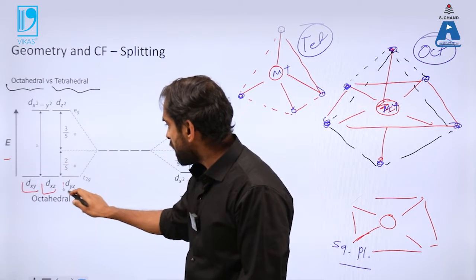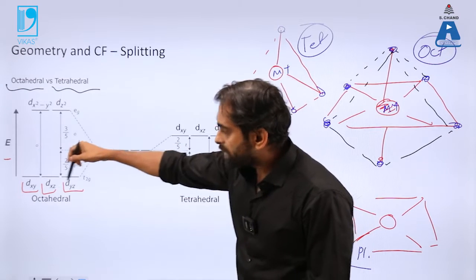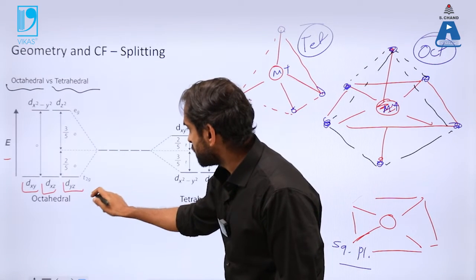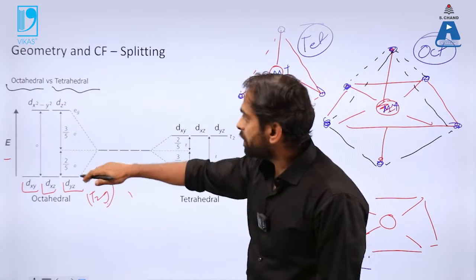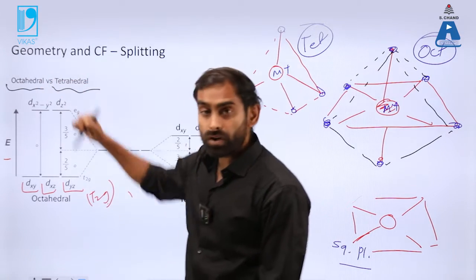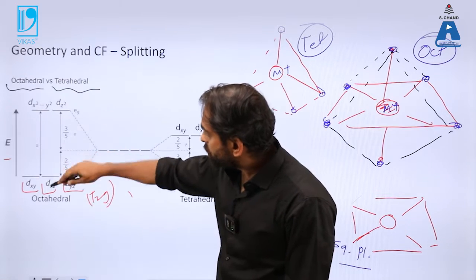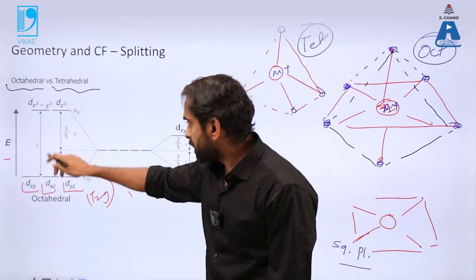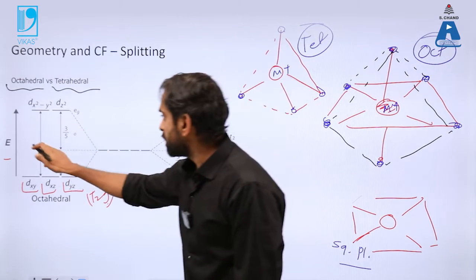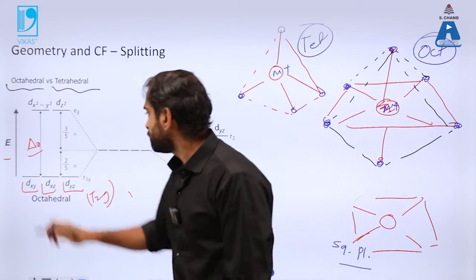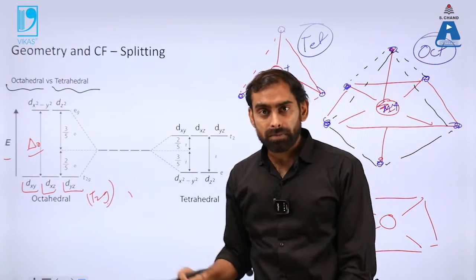And there is an energy gap which is represented by Δo or we can represent it by delta o. Now if you compare the same energy gap with that of tetrahedral, so this is excited state of d orbitals in degenerate form.